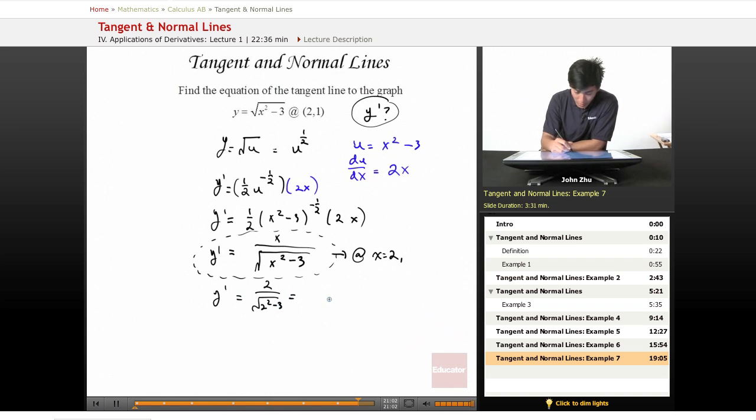And we get a number that's 1... excuse me, it's not 1. 2 over square root of 4 minus 3. So it's actually 2. So the slope at x equals 2 equals 2.